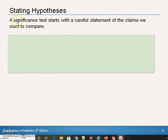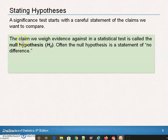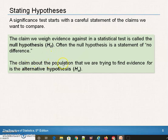A significance test starts with a careful statement about a claim. The claim that we weigh evidence against is called the null hypothesis test, H sub zero. Often the null hypothesis is a statement of no difference. The claim about the population we are trying to find evidence for is the alternative. Remember: evidence against the null hypothesis is evidence for the alternative. It's always that way for these hypothesis tests.